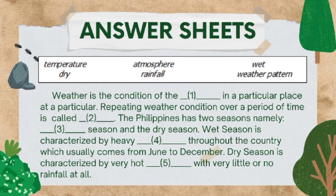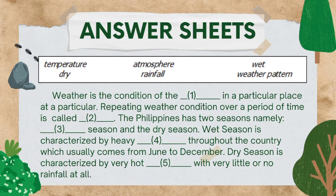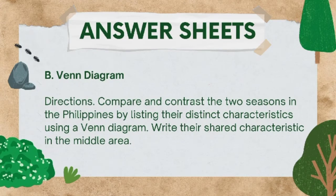Let us now read the paragraph together: 'Weather is the condition of the [atmosphere] in a particular place at a particular time. Repeating weather conditions over a period of time is called [weather pattern]. The Philippines has two seasons, namely [wet] season and the dry season. Wet season is characterized by heavy [rainfall] throughout the country, which usually comes from June to December. Dry season is characterized by very hot [temperature] with very little or no rainfall at all.'